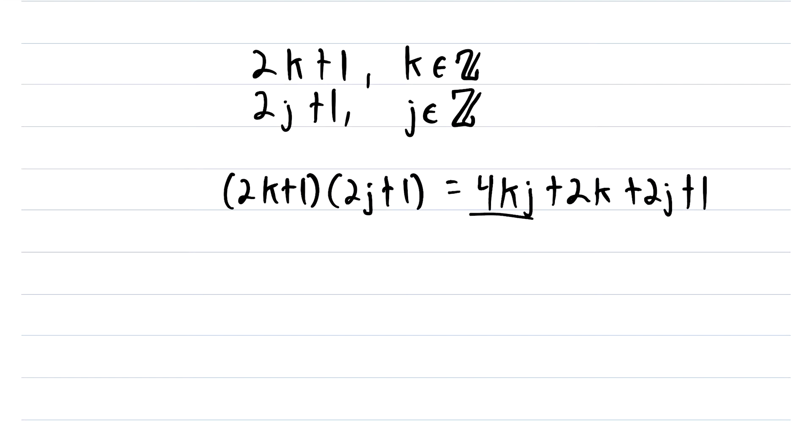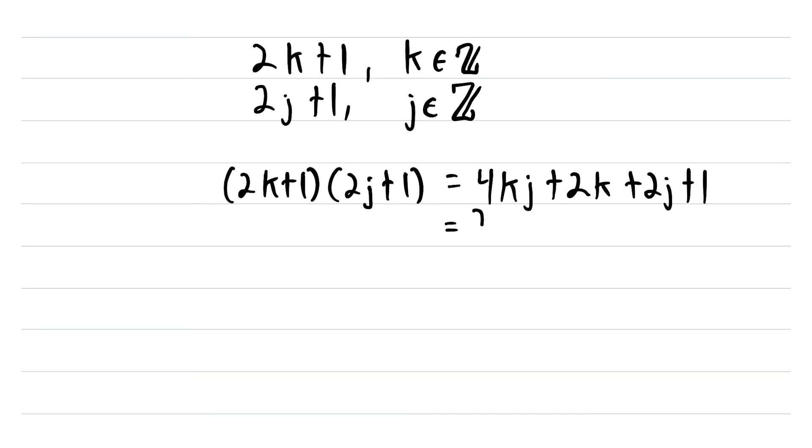Now we're pretty close. We have three terms here that all have a factor of 2 in common, and then we have a plus 1 at the end. So all we have to do is factor out a 2. Doing that gives us 2 multiplied by 2kj plus k plus j, and then of course we still have that plus 1.